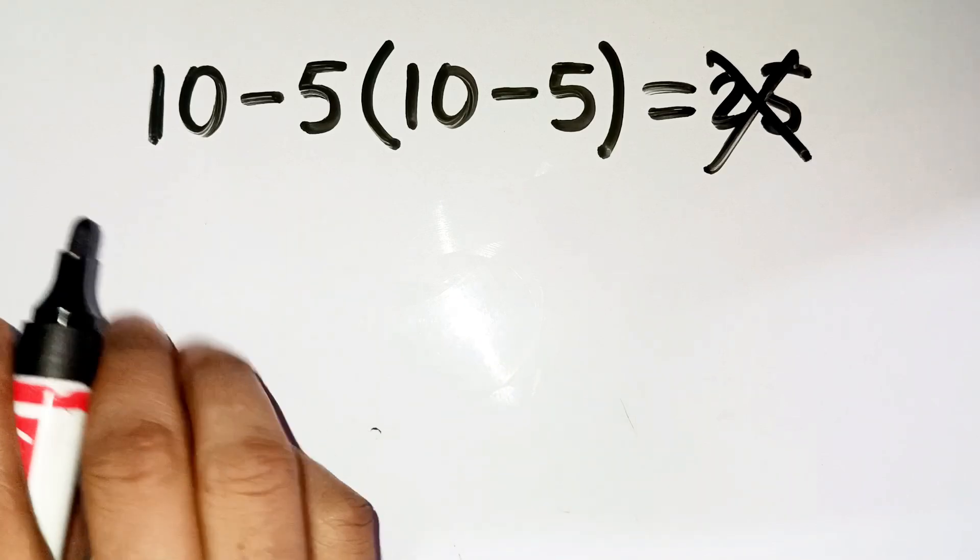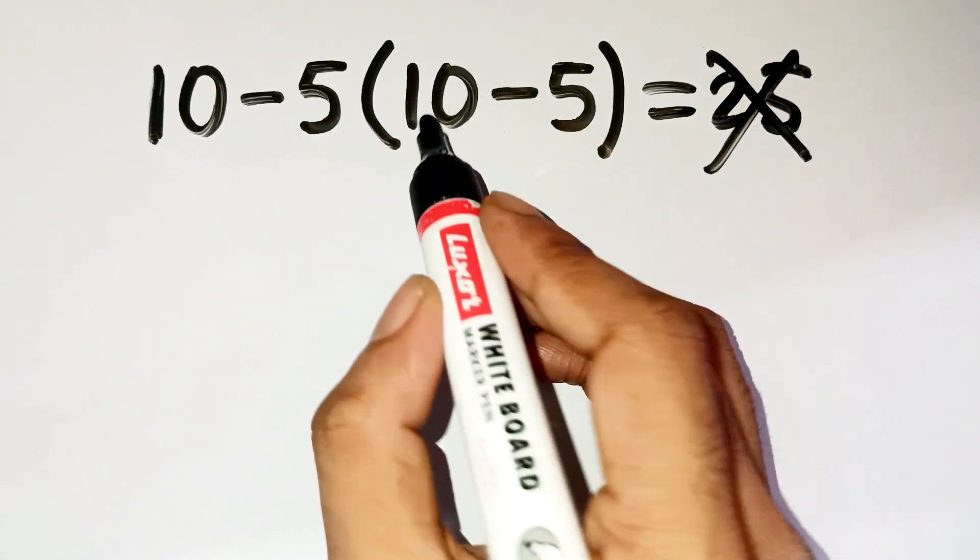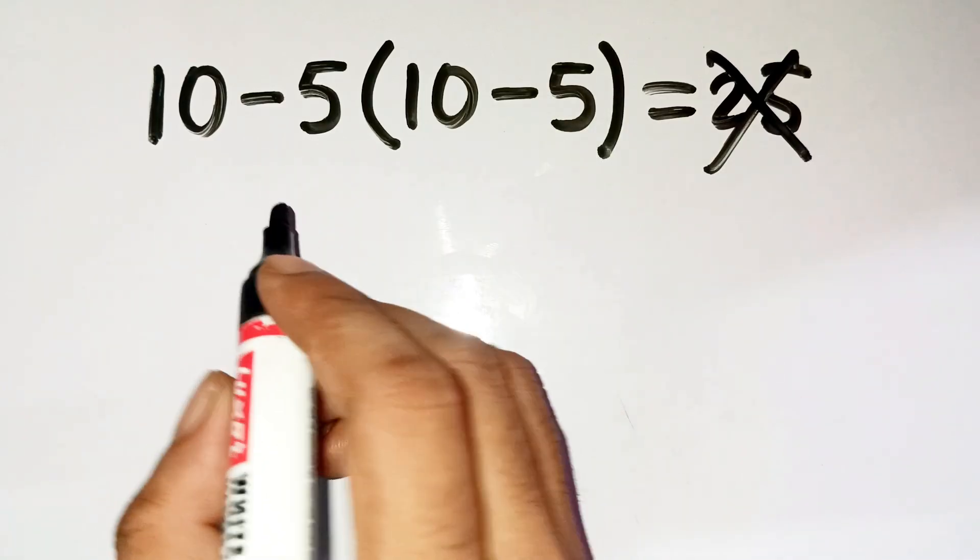Okay, so the problem is 10 minus 5 times, open bracket, 10 minus 5, close bracket. I know, it looks super easy, right?